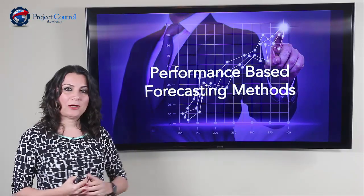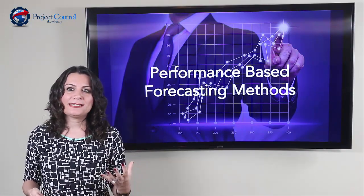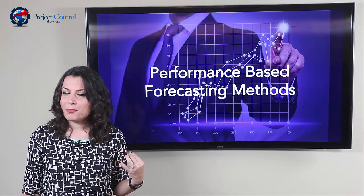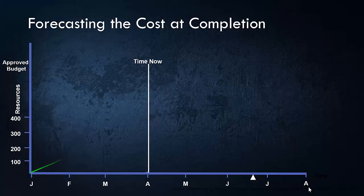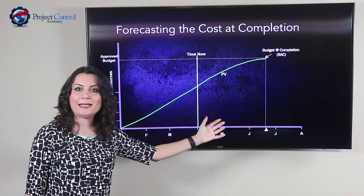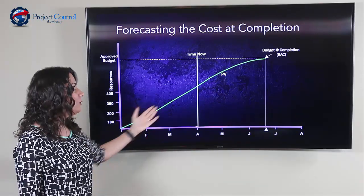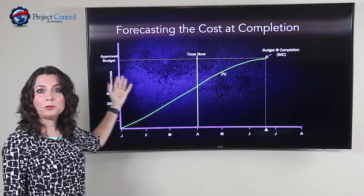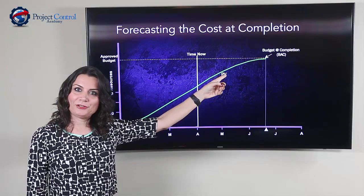Going back to the topic of today's presentation on cost forecasting — let's better understand what we are trying to forecast. Looking at this project example, we have distributed our approved budget over time, which gives us our Plan Value or PV. Plan Value is basically the time-phased budget distributed over the planned duration of the project. The total Plan Value at the end of the project should always match our approved budget, known in Earned Value Management terminology as Budget at Completion, or BAC.